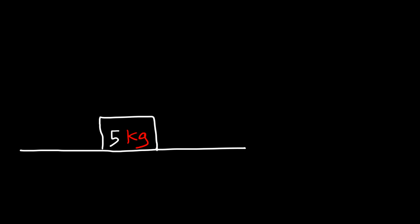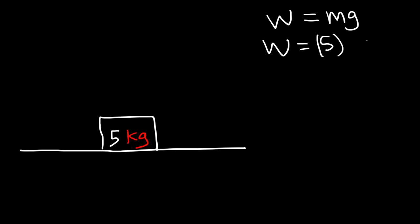If you have a flat object on a surface, the normal force is simply the weight of the object. Let's calculate the weight force. The weight is mg, so we have a mass of 5 times a gravitational acceleration on Earth of 9.8. And 5 times 9.8 is 49 newtons. So that's the weight force.